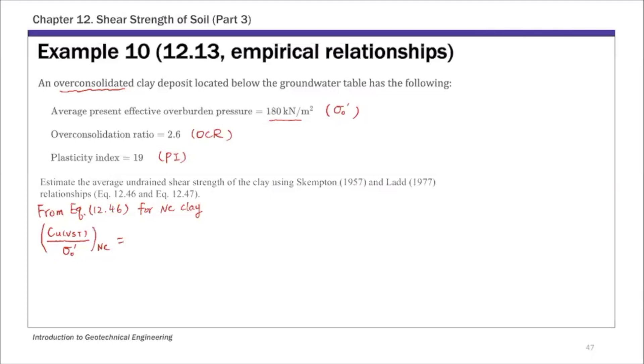So that's equation 12.46: 0.11 plus 0.0037 times PI. And if you substitute PI of 19, this gives 0.1803. So that's basically Skempton's equation 12.46, but that's for NC clay.